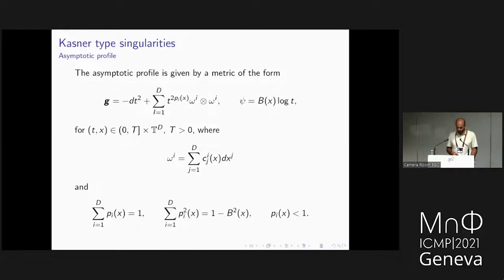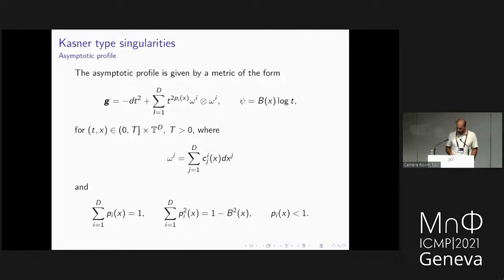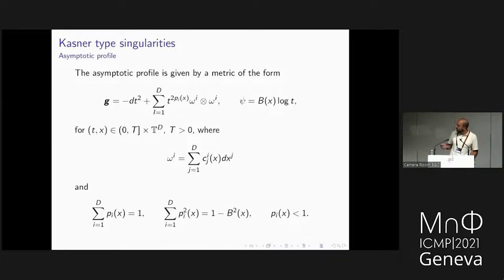Let's now discuss the Kasner-type singularities that we understand quite well. Think of these as singular solutions with a Big Bang singularity at t equals zero. The asymptotic profile of the solution is like a Kasner singularity, but the Kasner exponents and the coefficient of the logarithm — the linear order term — are functions that vary with spatial coordinates. Moreover, the principal one-forms omega_i are not coordinate one-forms but linear combinations of the coordinate one-forms, with coefficients also depending on space. The Kasner relations are satisfied but now pointwise.